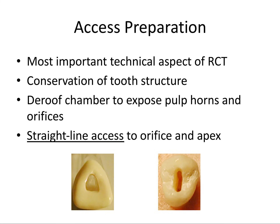This access prep is usually done with a round burr and/or a tapered burr in a high-speed handpiece. As soon as the pulp tissue is accessed — if not before you even begin the access prep — the standard of care is that the patient has a rubber dam on, to ensure that saliva, blood, and bacteria don't leak into your operative field.